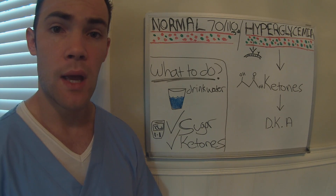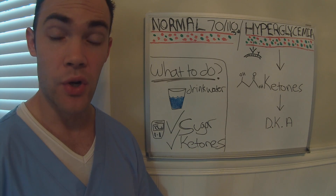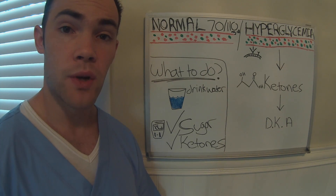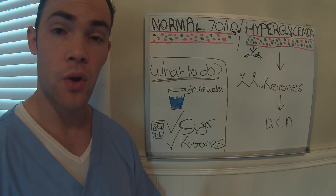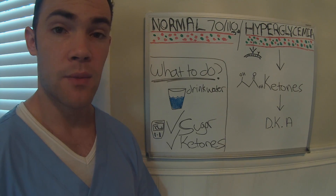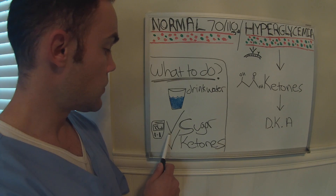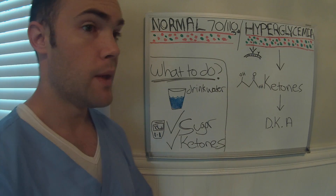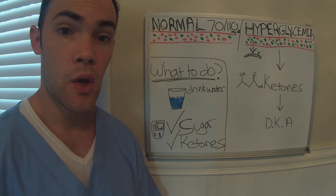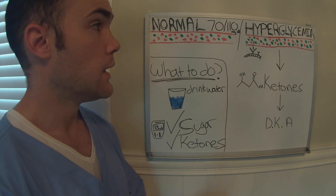If you notice any of these symptoms, there are a couple of things you can do at home. First, check your blood sugar using your glucometer. You also want to drink water or caffeine-free, sugar-free beverages — this will prevent your blood sugar from getting higher. If your blood sugar is above the normal range and you are diabetic with a sliding scale at home, compare your result to your sliding scale to determine how much insulin you should take to bring your sugar back down.